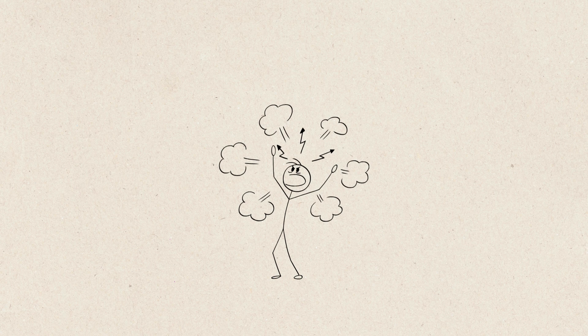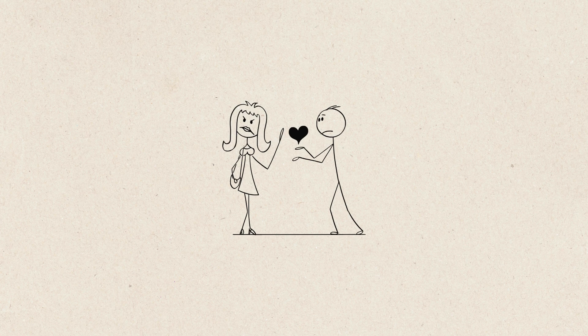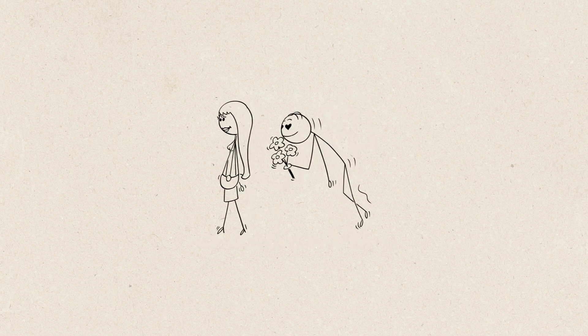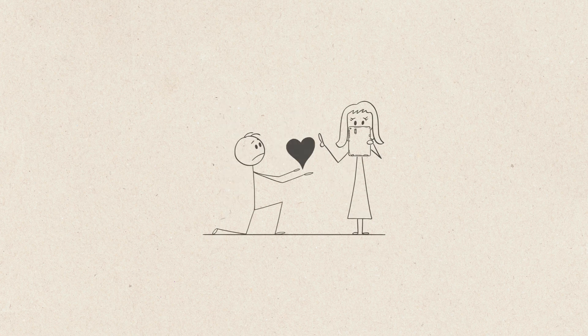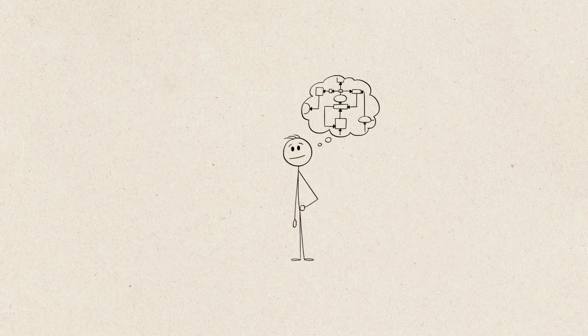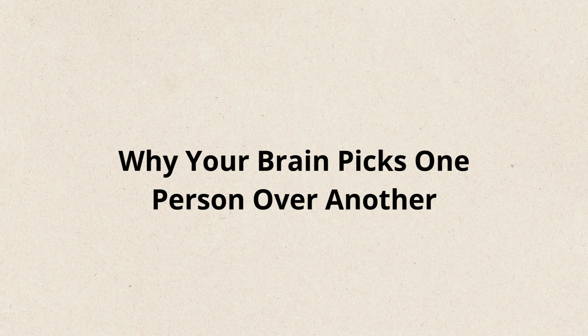But here's where it gets crazy. These systems don't always work together. That's why you might feel lust for one person, deep attraction for another, and long-term attachment to someone entirely different. It explains why we sometimes feel drawn to people who aren't good for us, because different parts of our brain are pulling us in different directions.